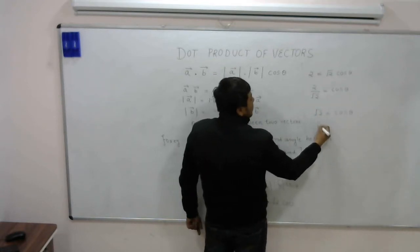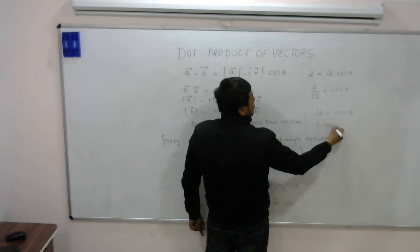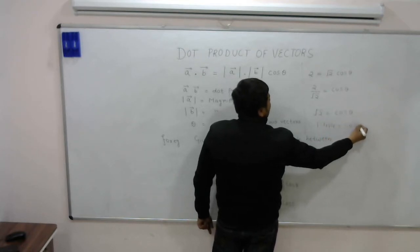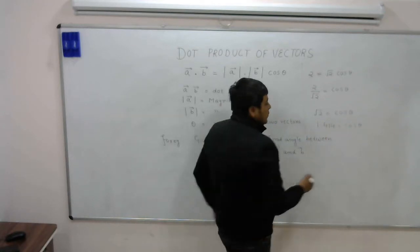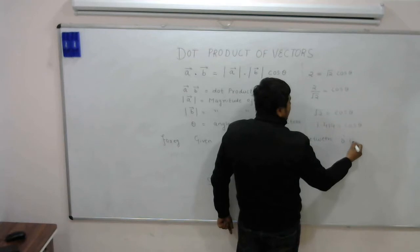Now root 2 equals 1.412. The value of cos theta can never be greater than 1. So theta is not possible.